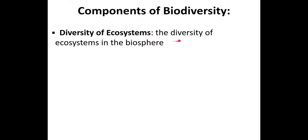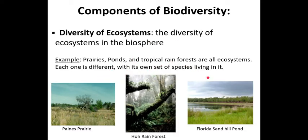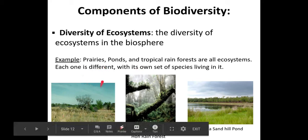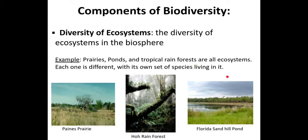The components of biodiversity start with ecosystem diversity — the diversity of ecosystems within the biosphere, which is the part of Earth where living things survive. Based on weather and climate patterns, different species can dominate particular areas, creating different ecosystems. The organisms in a rainforest would be very different from those in a prairie, with key factors being the amount of light and water available in those two different ecosystems.